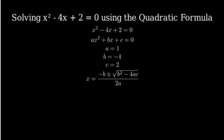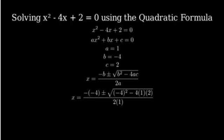Let's substitute our values into the formula. We get x equals negative of negative 4, plus or minus the square root of negative 4 squared minus 4 times 1 times 2, all divided by 2 times 1.